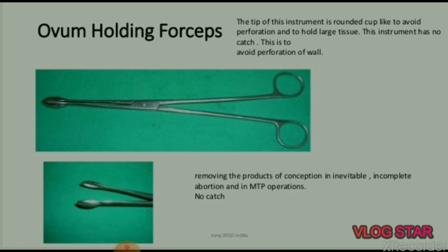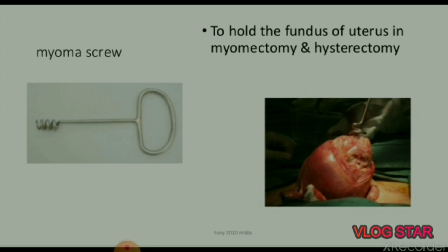Next instrument is ovum holding forceps. The tip is rounded and cup-like to avoid perforation and to hold large tissue. This instrument has no catch, to avoid perforation of the uterine wall. It helps in removing products of conception in inevitable or complete abortion and in MTP operations.